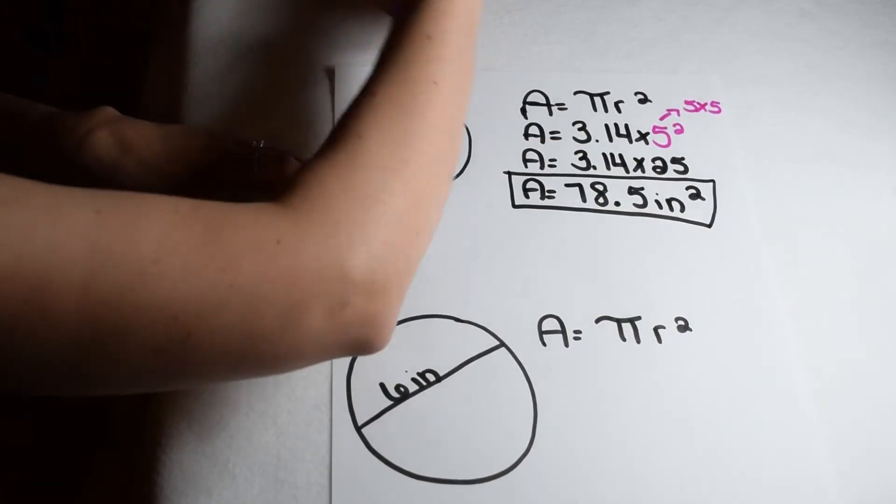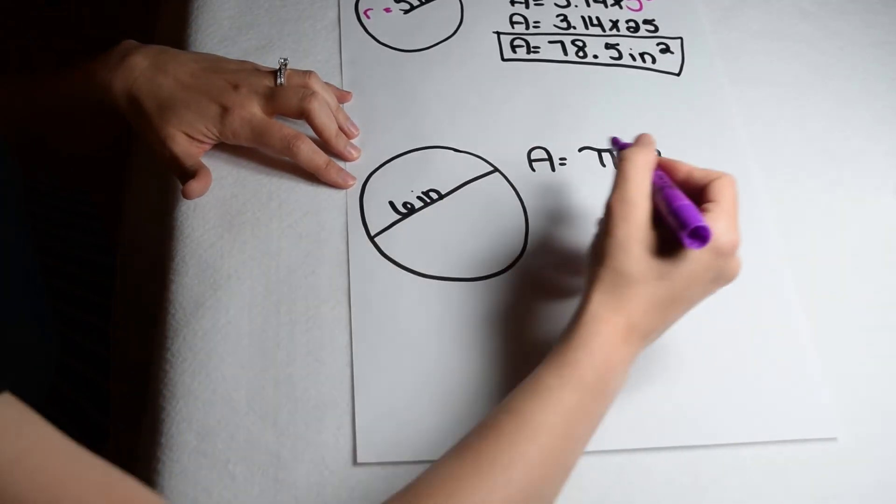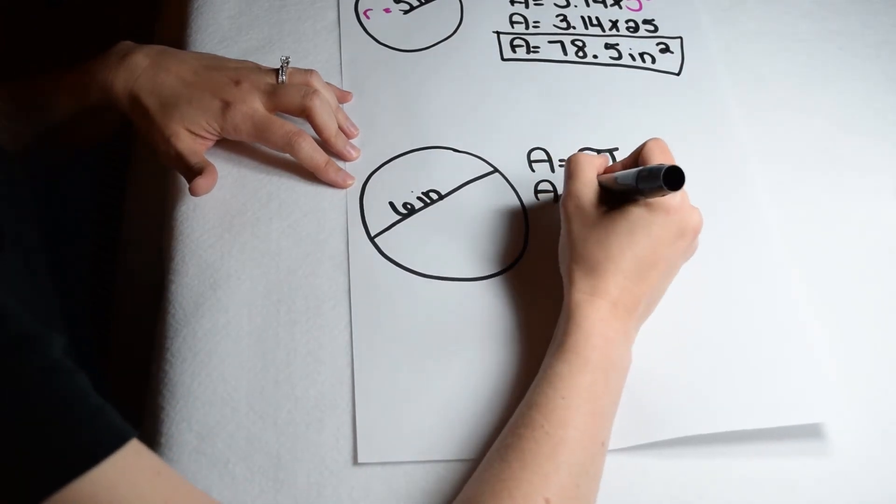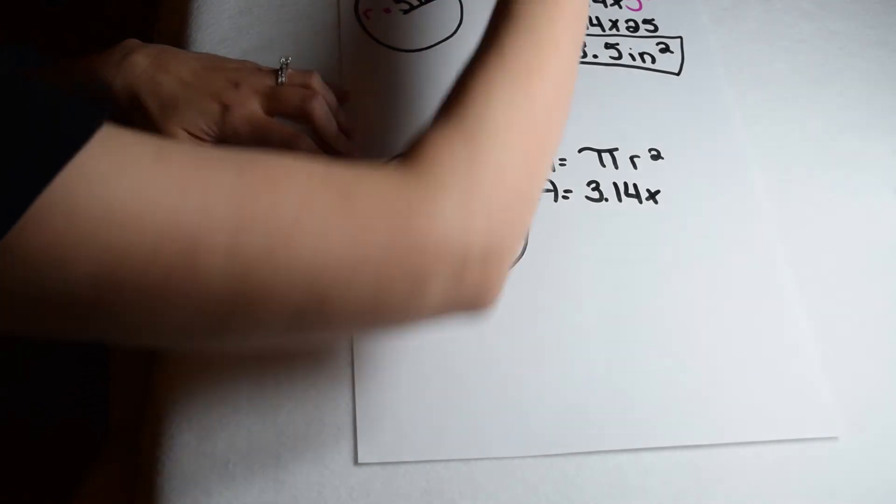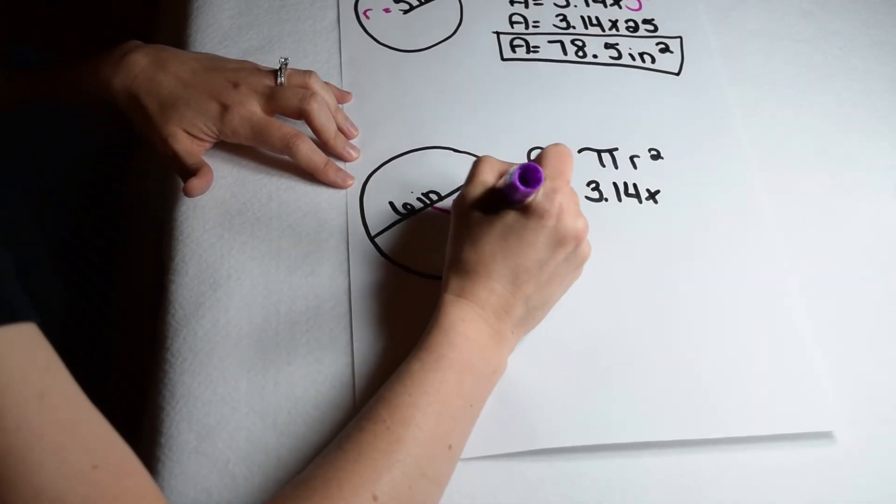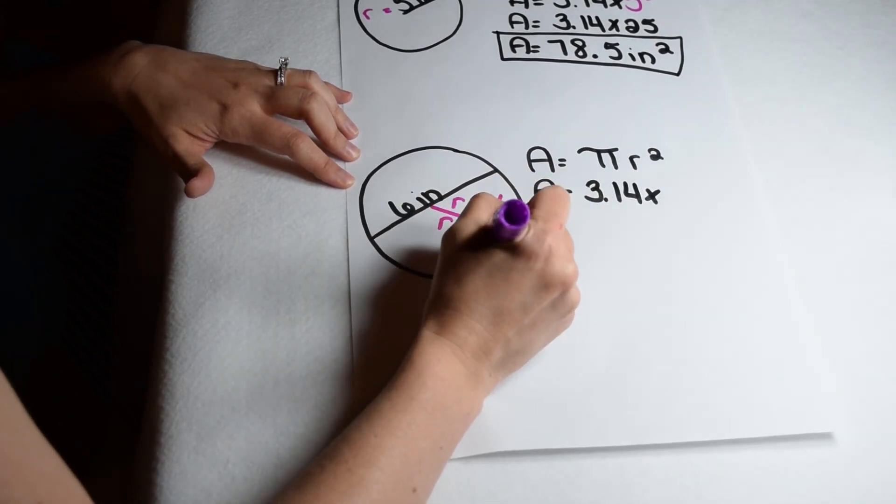Now, what if our circle has a diameter instead of a radius? We still have to use the equation area is pi times radius squared. So I'm still going to start out as 3.14 for pi. But before I can multiply, I have to find what my radius is. Radius is always half the diameter. So since my diameter is 6, I know my radius is going to be half that or 3 inches.